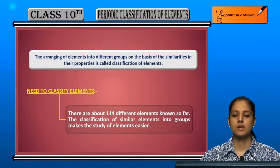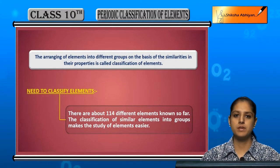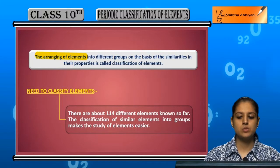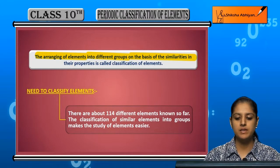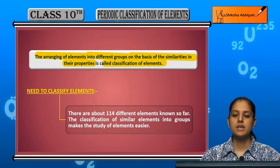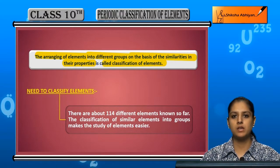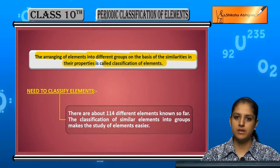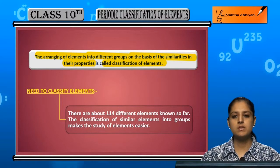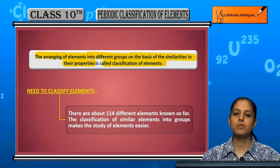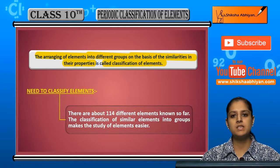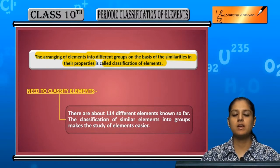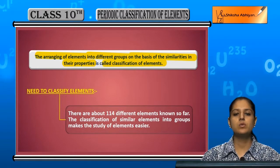Let us start with our first topic: classification of elements. The arranging of elements into different groups on the basis of similarities in their properties is called classification of elements. We form elements into groups, and the criteria are based on similar properties. If elements have slightly similar properties, we put them in one group.